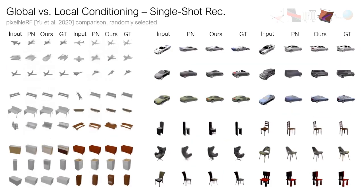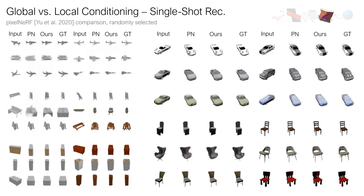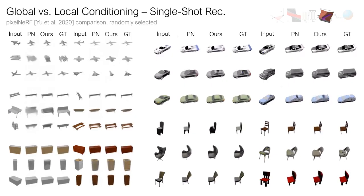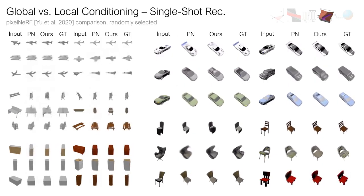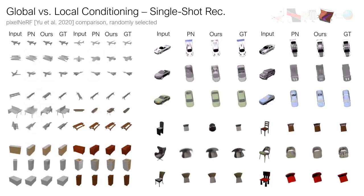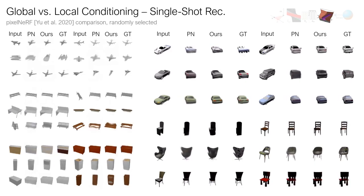Finally, we provide a comparison to the recently proposed PixelNRF, an exciting model that leverages local conditioning using convolutional features instead of a global latent code and enables stronger out-of-distribution generalization. A locally-conditioned LFN that, like PixelNRF, exploits the shift-equivariance of convolutional neural networks is an exciting avenue for future work.